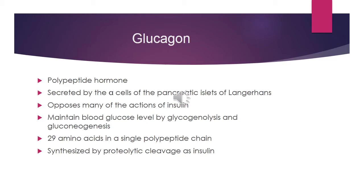Insulin is produced in the well-fed state of the body, where energy is being stored. While in the case of glucagon, glucagon is produced in the condition of starvation, stress, or fever. Glucagon plays an important role in metabolism because in the condition of starvation it maintains blood glucose levels through two procedures: glycogenolysis and gluconeogenesis.